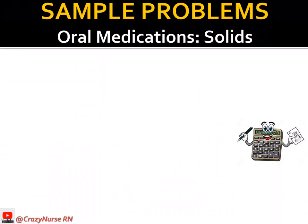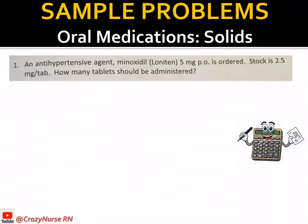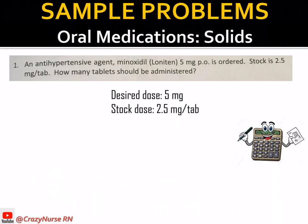We have sample problems for oral medication in solid form. An antihypertensive agent, minoxidil (Loniten), 5 milligrams per oral is ordered. The stock is 2.5 milligrams per tablet. How many tablets should be administered? First, we determine the desired dose, which is 5 milligrams, and the stock dose is 2.5 milligrams per tablet.